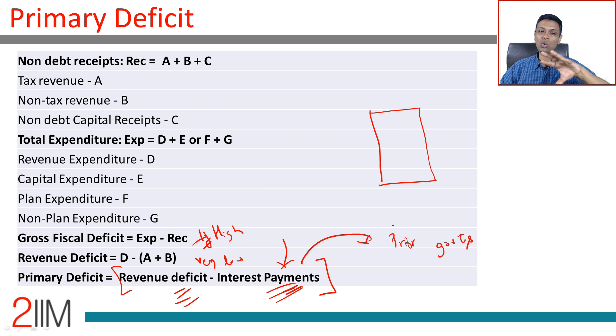So know these terms, know intuitively what is meant by fiscal deficit, revenue deficit, primary deficit, what are tax revenues, non-tax revenues, what is meant by capital expenditure, revenue expenditure. Know those terms intuitively, that is very vital.